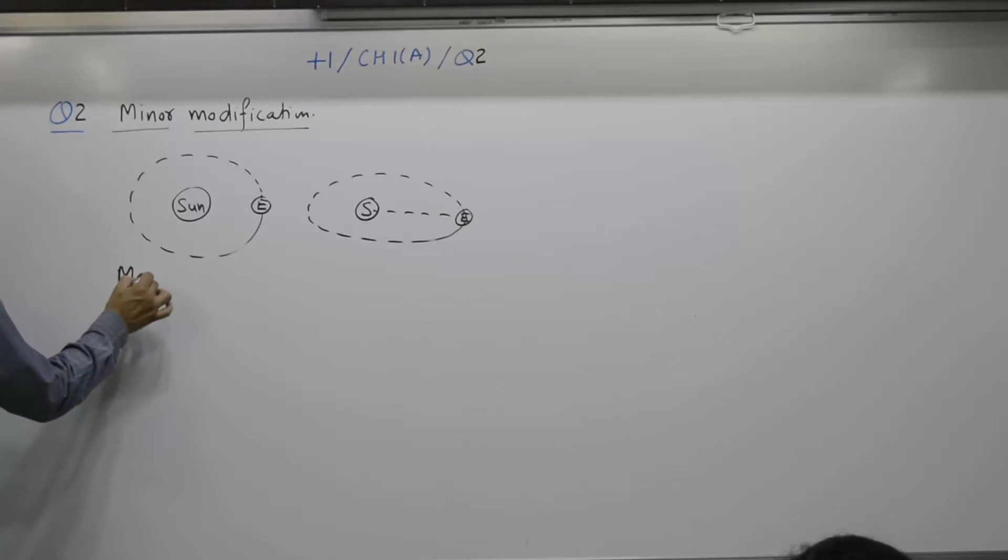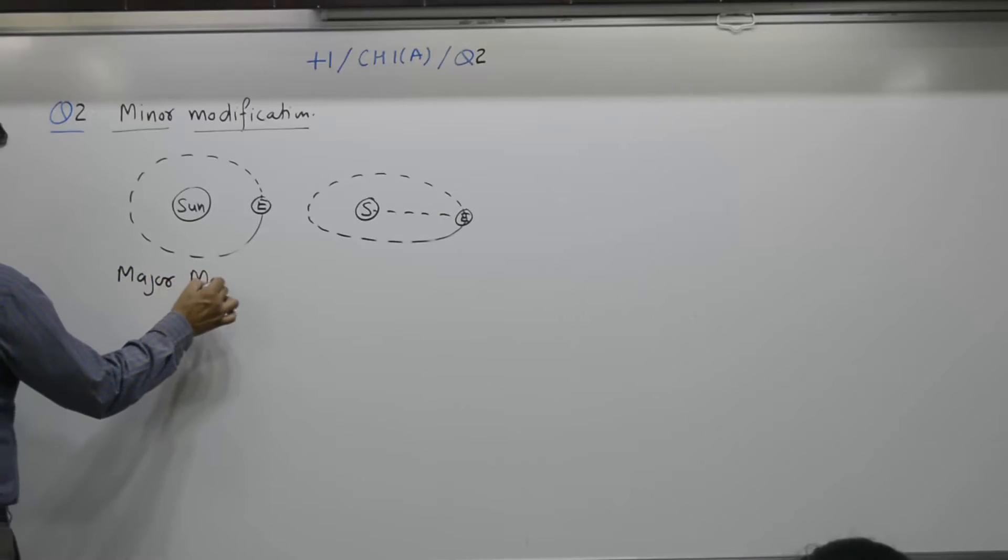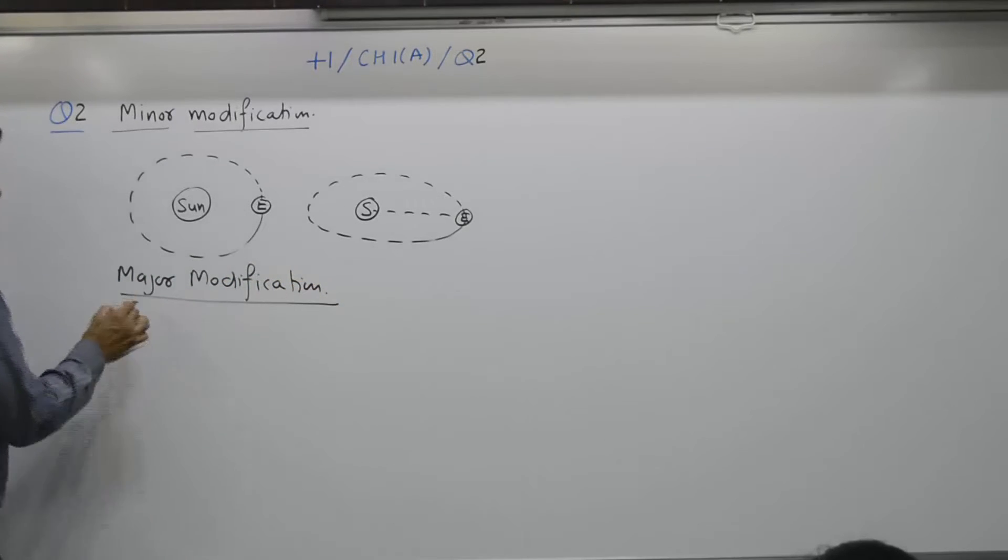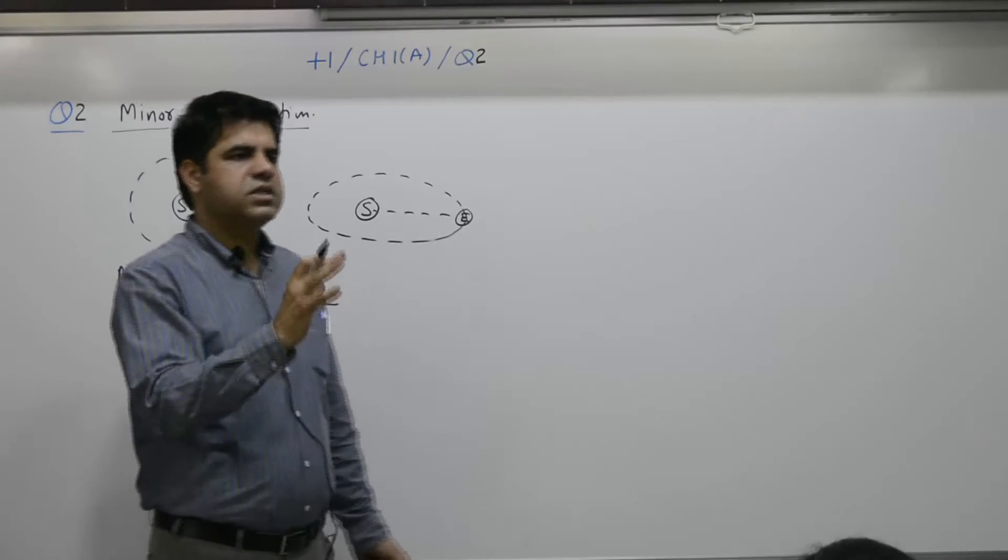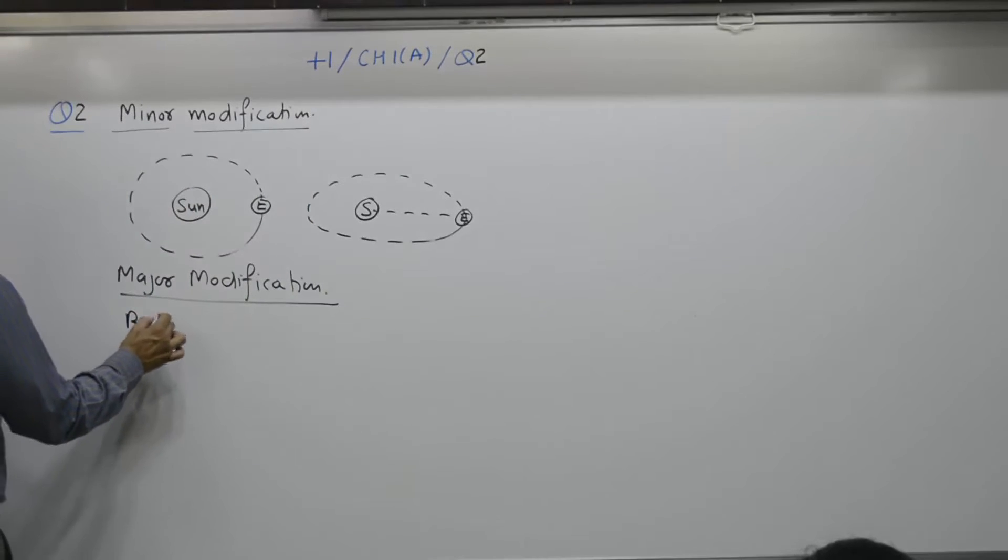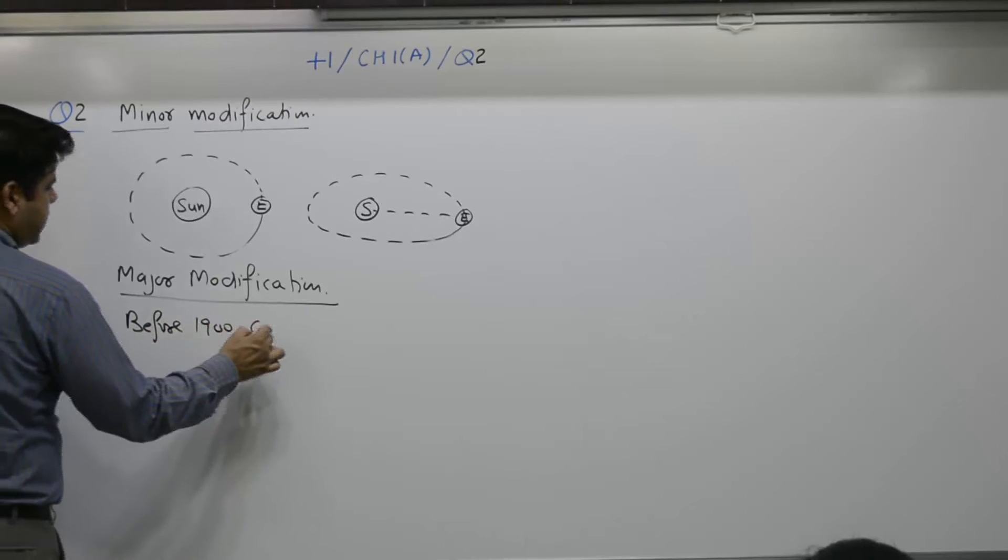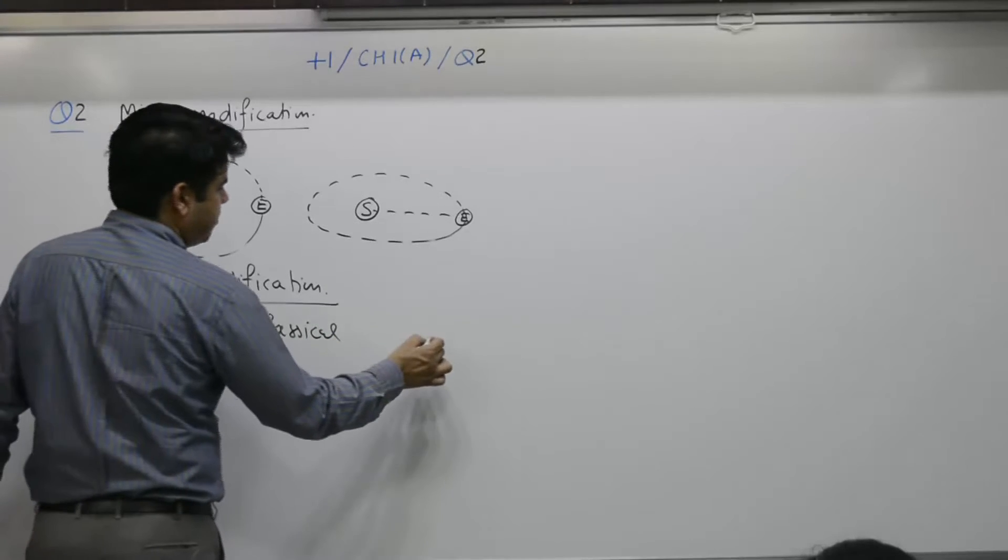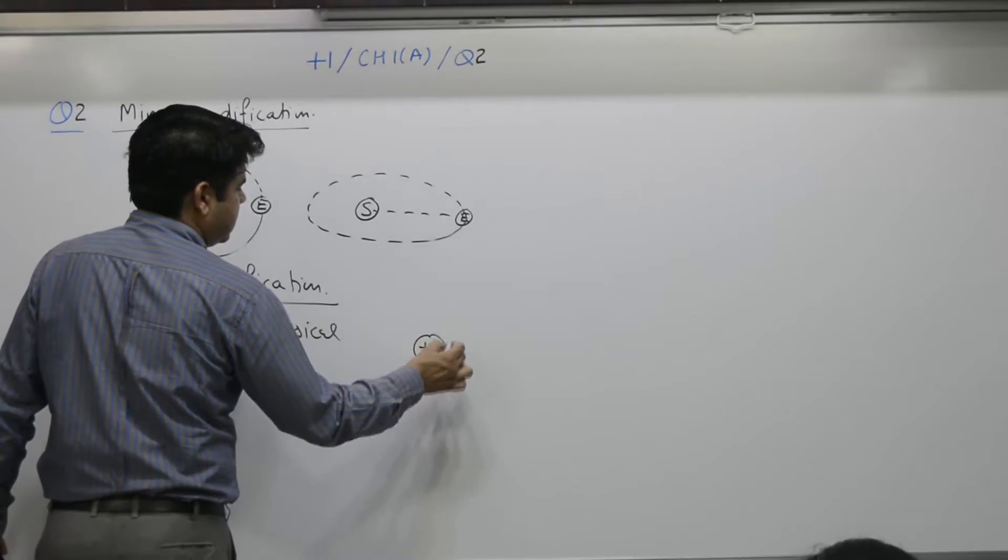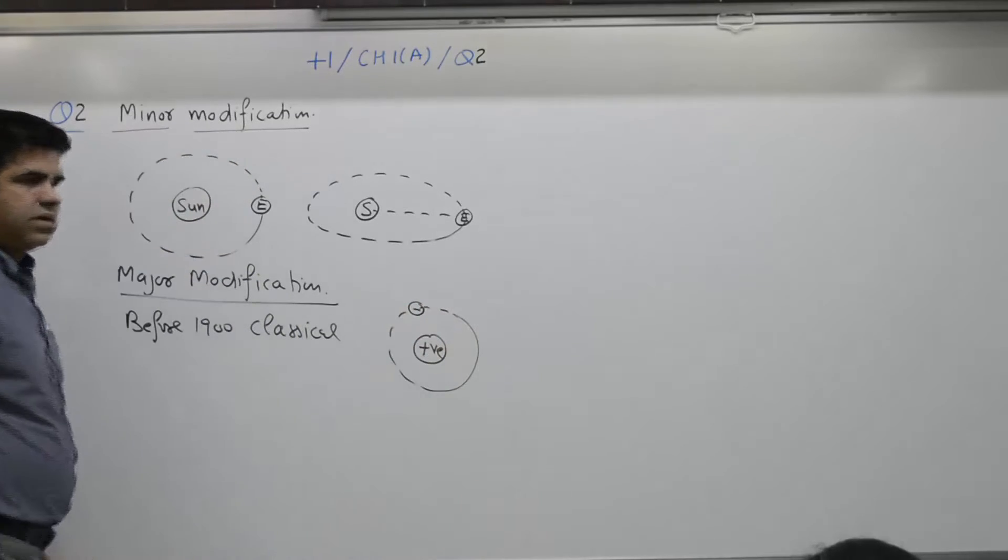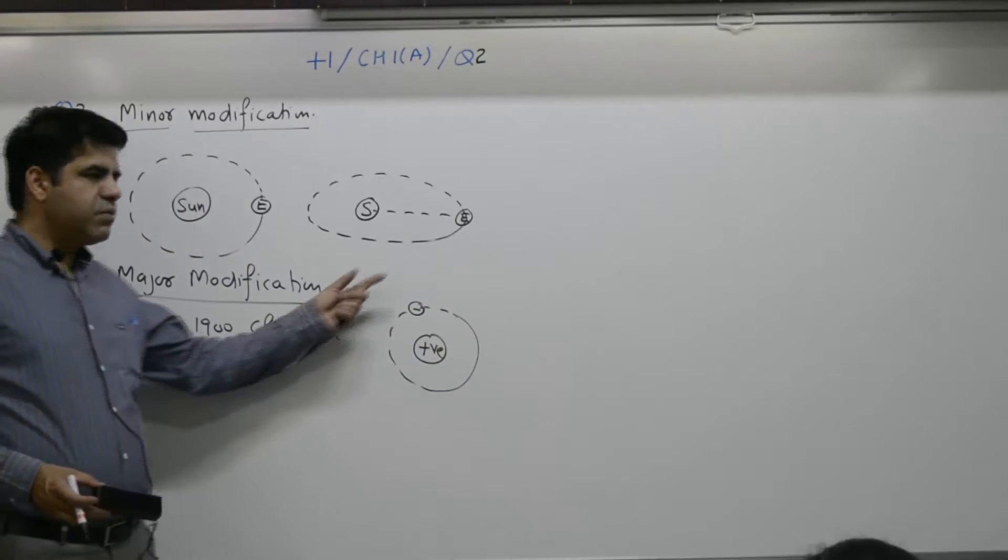Major modification. When absolutely new theory is given. Before 1900, classical theory was used to explain atom. Positive charge, what you have in surrounding is electron. So this theory was unable to explain it.